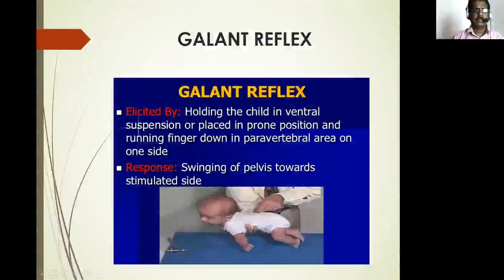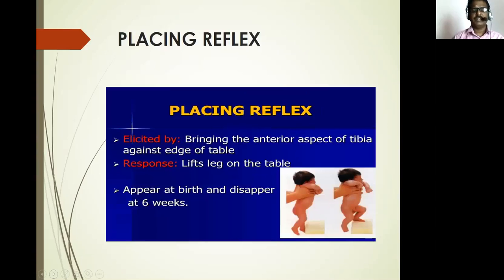Gallant reflex: holding the child in ventral suspension or placed in prone position, and running a finger down the para-vertebral area on one side — the response is swinging of the pelvis towards the stimulated side. Placing reflex: bringing the anterior aspect of the tibia against the edge of a table — the response is the leg lifts onto the table. Appears at birth and disappears at six weeks.